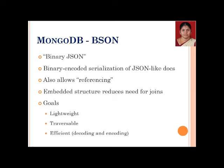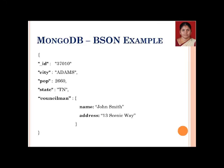BSON allows MongoDB to easily reference all documents and supports indexing. Embedded structures reduce the need for joins, which are performance-intensive in SQL. The goals of BSON are: lightweight, easy traversal, and efficient encoding and decoding. These features make MongoDB suitable for all kinds of big data storage and processing.